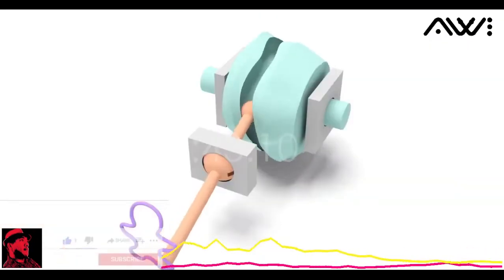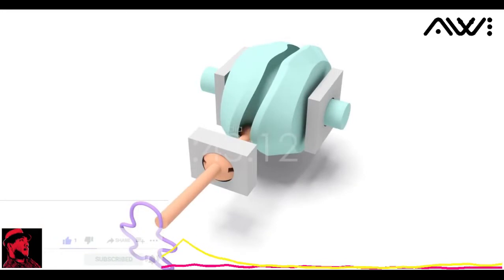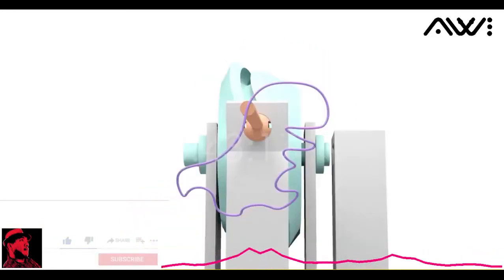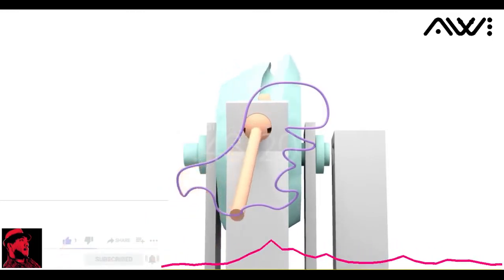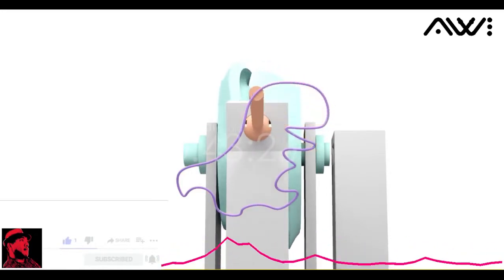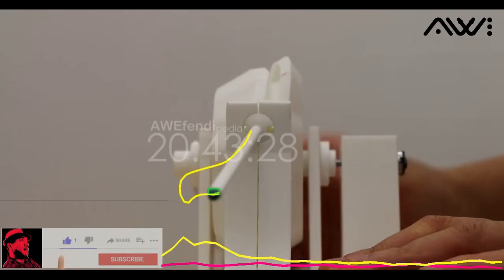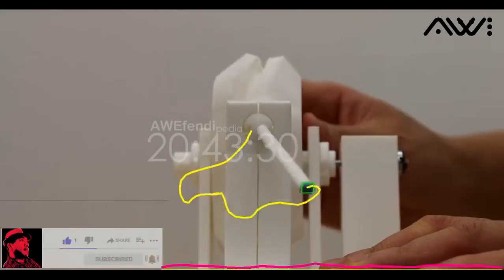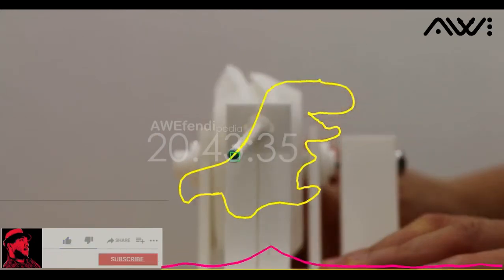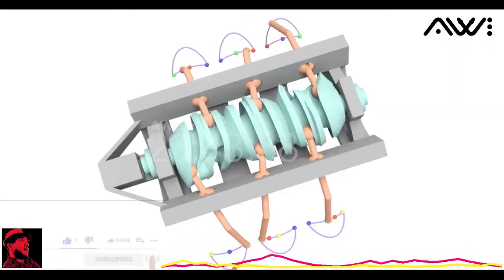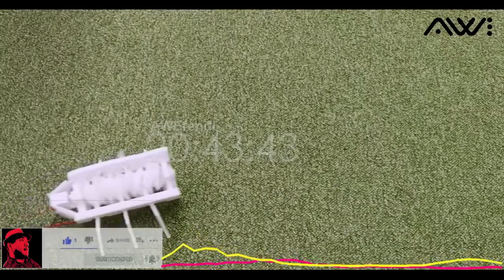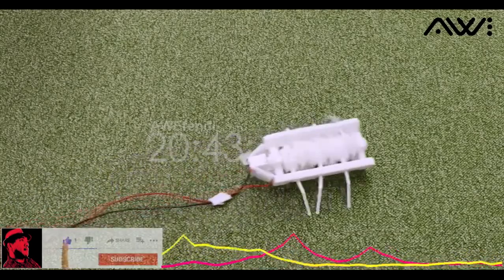We present a new kind of cam-follower mechanism that can exactly realize 3D trajectories specified by users. We propose a computational approach to modeling and designing these mechanisms, and verify their kinematic performance with 3D printing. By using our approach, we are able to design and 3D print a robot that can walk following a user-specified gait.